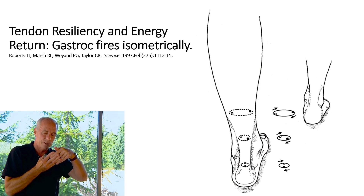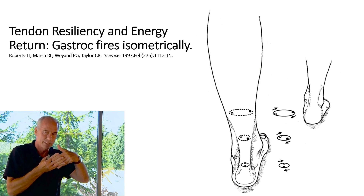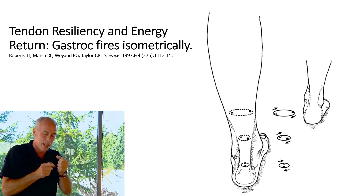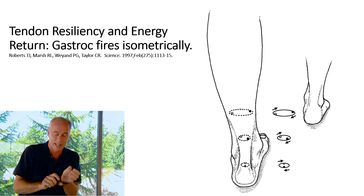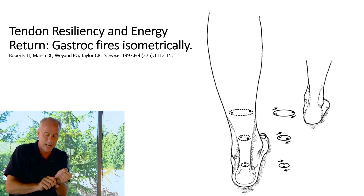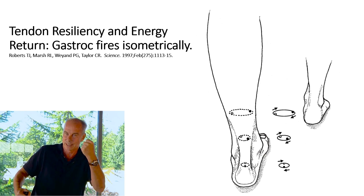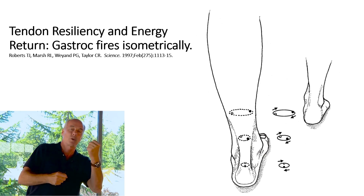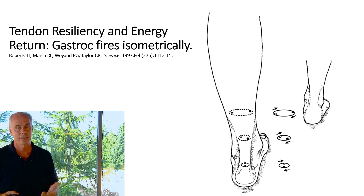The actin-myosin filaments lock on each other, and then the tendon starts to stretch. Because the Achilles tendon has a 90-degree rotation in it, it stretches and then the force gets snapped back — it's free energy.